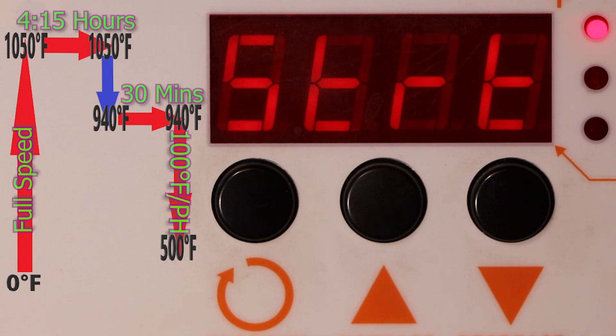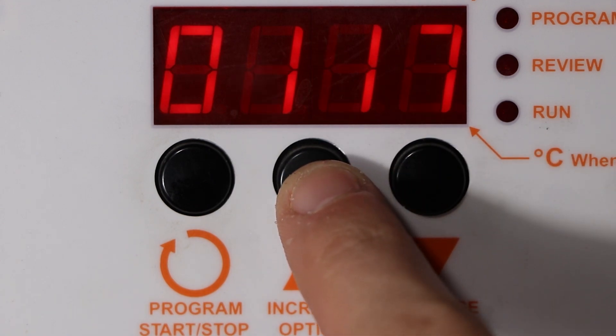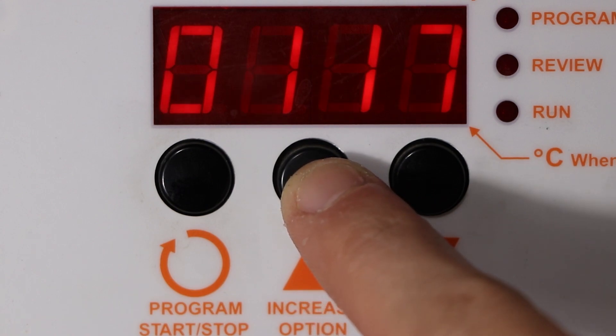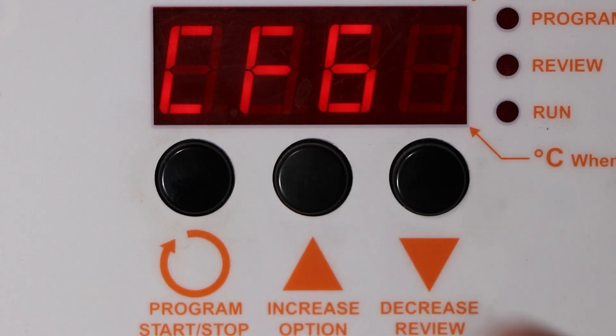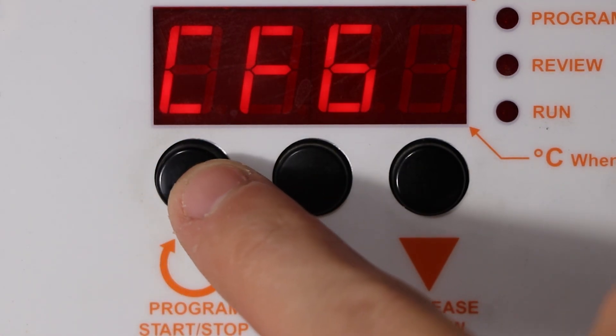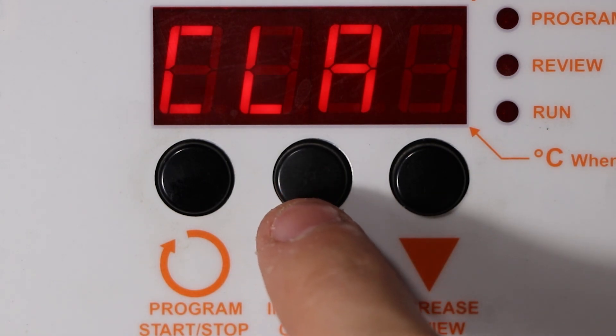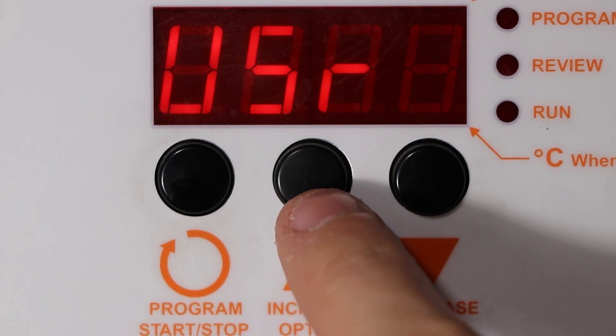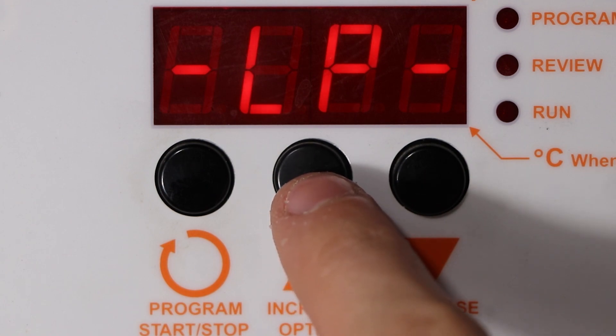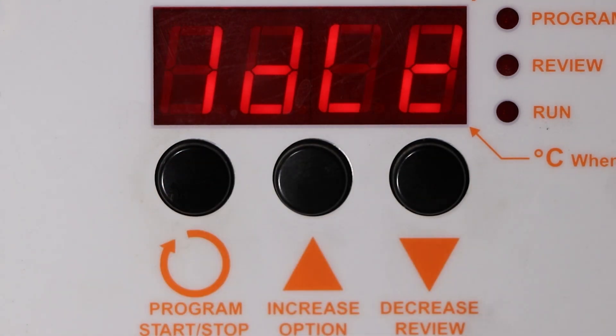And now I'm going to show you how to change the program. You can do borosilicate, soft glass, and even fuse glass together. Hold down the option button until CFG pops up, and then press the program button. And then at this point, you press the up and down buttons to cycle through the programs. Press the start stop program button again to select it.